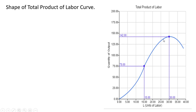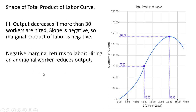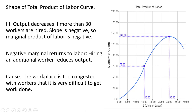Let's look at the final section of the total product of labor curve. This is an extreme section where output actually decreases if the firm is hiring additional workers — that occurs when the firm hires more than 30 workers. The slope is negative, so the marginal product of labor is negative. Hiring the next worker in this range doesn't increase output or keep it the same — it actually falls. The reason is that the workplace becomes so congested with workers that it is very difficult to move and get work done.